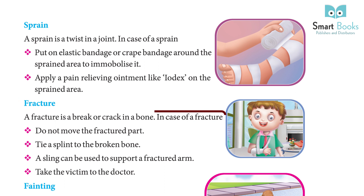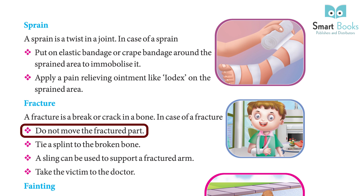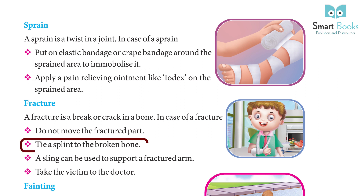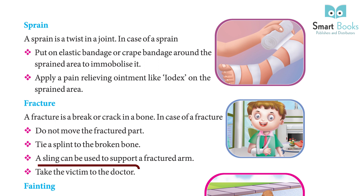Fracture: A fracture is a break or crack in a bone. In case of a fracture, do not move the fractured part. Tie a splint to the broken bone. A sling can be used to support a fractured arm. Take the victim to the doctor.